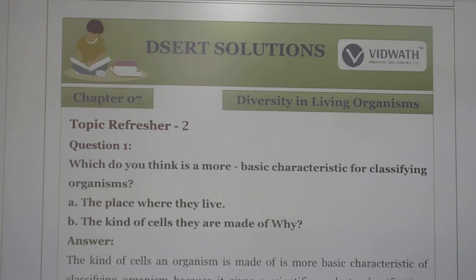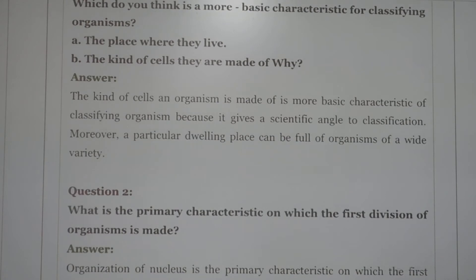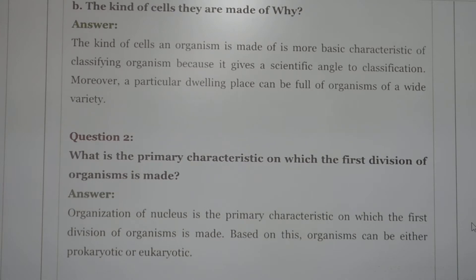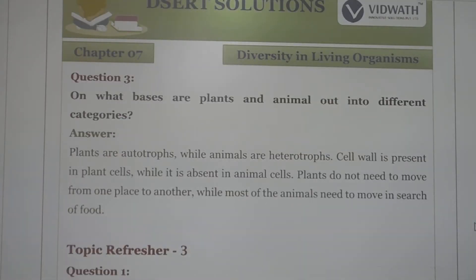Next question: which is the more basic characteristic for classification of living organisms — the place where they live or the kind of cells they are made up of? The kind of cells an organism is made of is the more basic characteristic for classification, as it gives a more scientific basis. The presence or absence of an organized nucleus is the primary characteristic on which the first division of organisms is made, classifying them as prokaryotic or eukaryotic.